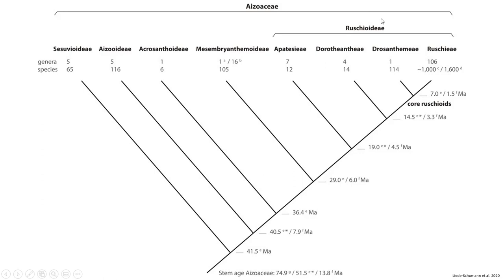In the Aizoaceae, the greatest diversity is in the subfamily Ruschioideae, especially in the latest diverging tribe. This hyper-diversification was quite puzzling for researchers even when they considered the arid climate at the time and the increased number of fossilized pollen grains after about 8 million years ago. They found it is most likely that nuclear genes regulating plant development led to the diversification of plant species in the tribe, because they allowed for a wide range of morphological forms and leaf shapes that are seen today — making them very successful in the habitats in which they reside.